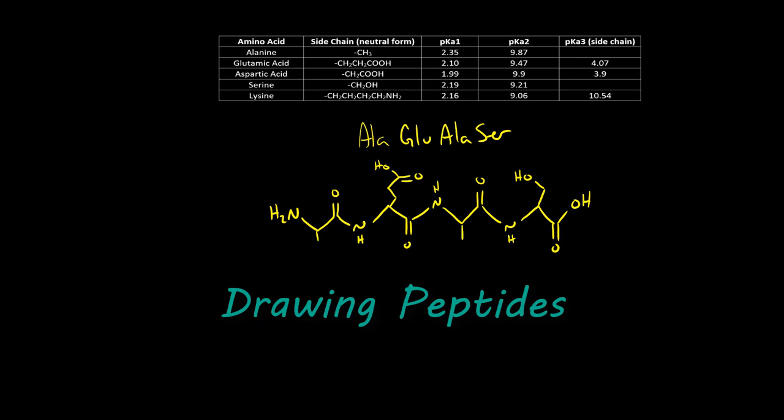So in this video, our goal is to take what we've learned about the acid base and speciation chemistry of amino acids and apply it to peptides. What I have drawn here is just an example peptide that we're going to use in this video. It sequences alanine, glutamic acid, alanine, serine.